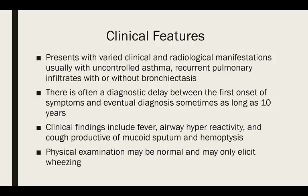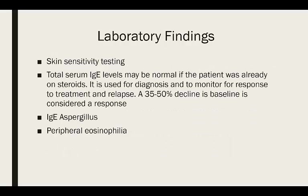In TB-prone areas, hemoptysis may lead to a mistaken diagnosis of tuberculosis. The physical exam is often normal or may just mimic an asthmatic patient. For laboratory diagnosis, the most important thing is the blood work. Skin sensitivity testing is also done but is not necessarily very reliable — there's a lot of variation in response to allergen, even from different manufacturers, based on the amount of immunogenic material. Peripheral eosinophilia may also be present and usually is.